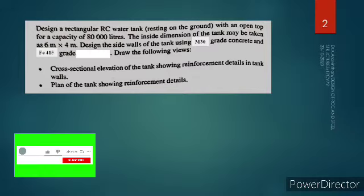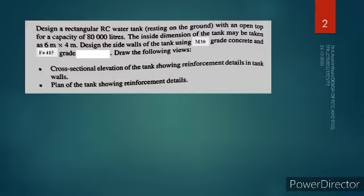The problem consists of a rectangular RC water tank resting on ground. The water tank will be resting on the ground surface, so it will not have any force acting outside the wall due to the soil, with an open top for a capacity of 80,000 litres. There is no roof for the water tank. Dividing 80,000 by 1000, we get 80 cubic meters of volume to be retained.